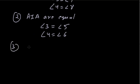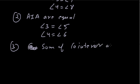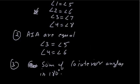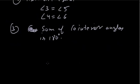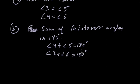The third result is that the sum of co-interior angles is 180°. So the sum of angle 4 and angle 5 is 180°, and the sum of angle 3 and angle 6 is also 180°. While solving problems, we must remember all three results: corresponding angles are equal, alternate interior angles are equal, and co-interior angles sum to 180°.